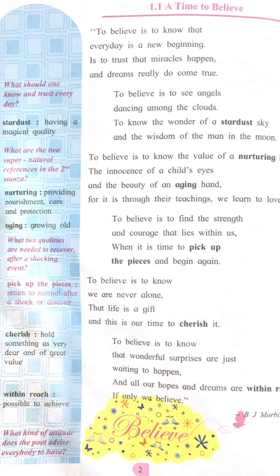Stanza five: 'To believe is to know we are never alone, that life is a gift and this is our time to cherish it.' The poet explains that we are not alone in facing problems — there are many like us. This life is a gift from God, so we must not waste it. Instead, we must cherish it. Cherish means to value something greatly. We must move on in our life.